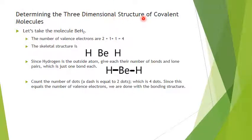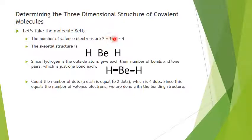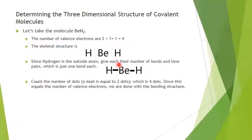Let's determine the three-dimensional structure of covalent molecules, starting with beryllium dihydride. First, count the valence electrons: beryllium has two, each hydrogen has one, so 2 + 1 + 1 = 4. The skeletal structure is H–Be–H, with beryllium in the middle. Give each hydrogen the number of bonds and lone pairs it usually gets — which is one bond each. Count the dots: each dash equals two electrons, so 2 + 2 = 4, and 4 equals our 4 valence electrons, so this is the bonding structure.